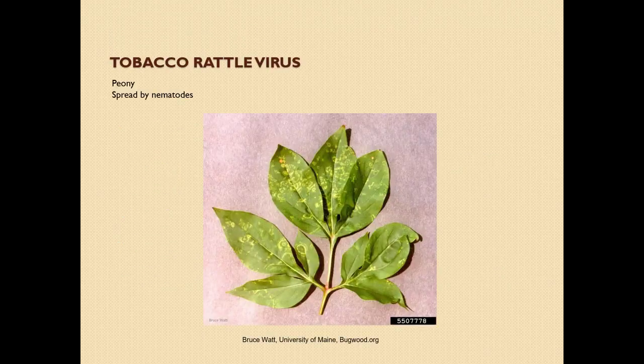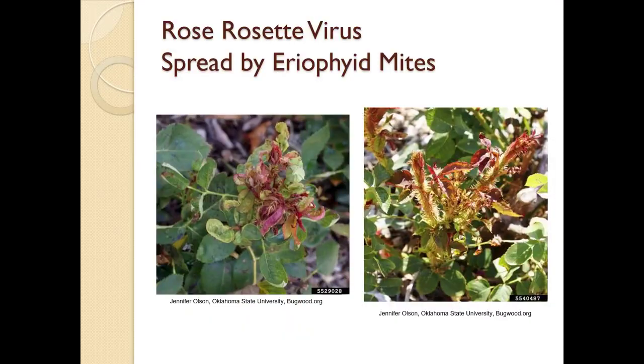Here's tobacco rattle virus on peony. Don't let the name of the virus mislead you — it's just probably the first plant they discovered the disease on. This is spread by nematodes. Here's rose rosette virus, which is spread by eriophid mites.